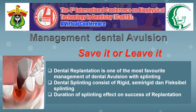Talking about the management of dental avulsion, we have two choices: we can save the tooth or we can leave it. But as dentists, we should save the tooth as long as possible. Tooth replantation is the best and most favored management of dental avulsion. Of course, it is done with splinting, and there are many kinds of dental splinting — for example, rigid splinting, semi-rigid splinting, and flexible splinting. We also have to pay attention to the duration of splinting, because it will affect the success of the replantation procedure.